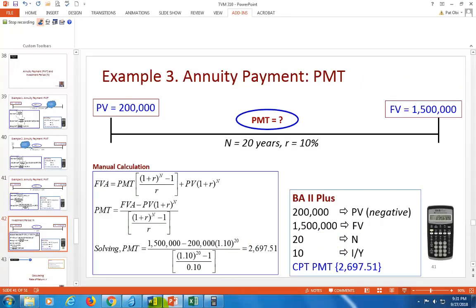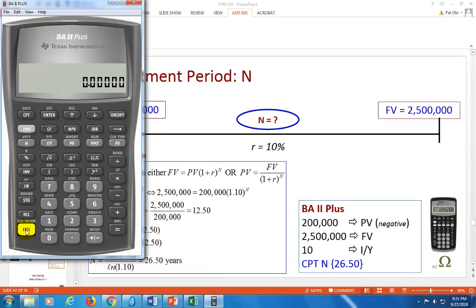Better yet, let's do the BA II Plus way. Clear. So with this, second clear TVM, second clear work. And you're going to put in $200,000 with a negative is your PV, and your financial goal is $2.5 million in the future. That's your future value. And 10 is your I over Y, and you're computing N. And that's your 26.5.